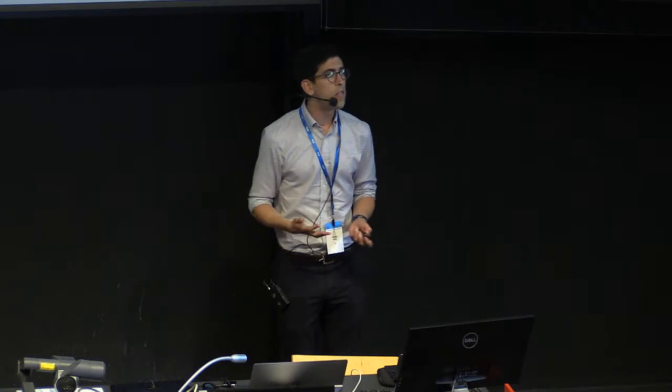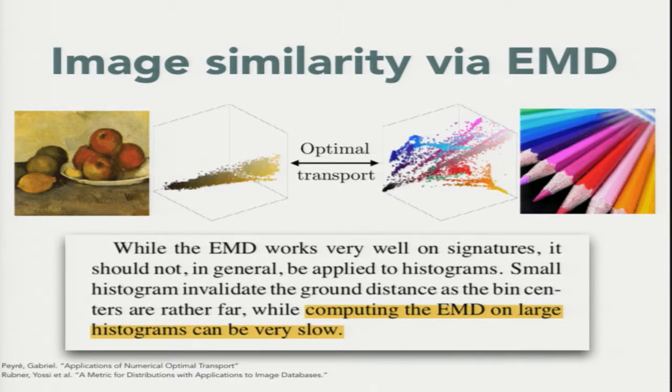The problem, even at the time, was they said you actually can't apply this to the histogram that come from images. You have to compute some smaller signatures.